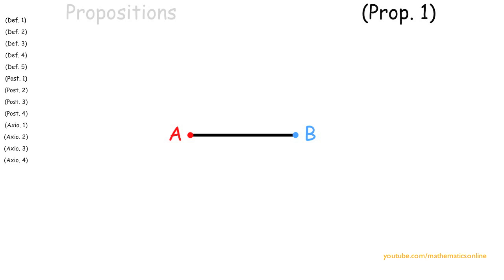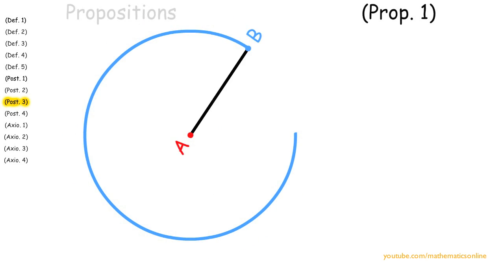So first we begin with postulate 3 and create circle AB. Again we use the same postulate and this time create circle BA.